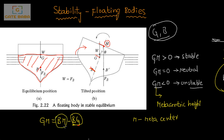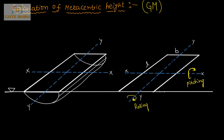Finding BM is the more complicated part. The relation for BM is given directly as BM equals I divided by V, where V is the volume of fluid displaced and I is the least (minimum) area moment of inertia — note this is the area moment of inertia, not the mass moment of inertia. So the metacentric height formula is: GM = I_min / V − BG.